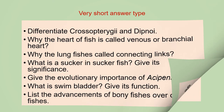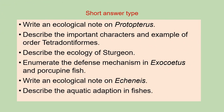The second category of questions are short answer type questions, which you have to answer in a single paragraph. The first question from this category is: write an ecological note on Protopterus. Next, describe the important characters and examples of Tetraodontiformes. Next, describe the ecology of Sturgeon.